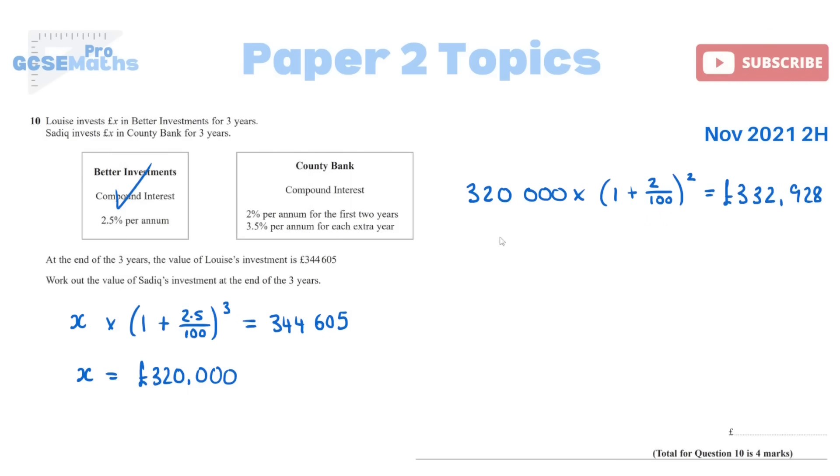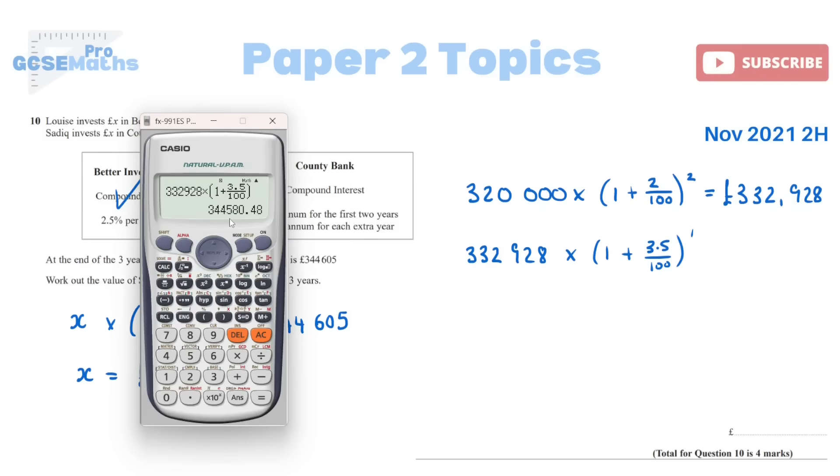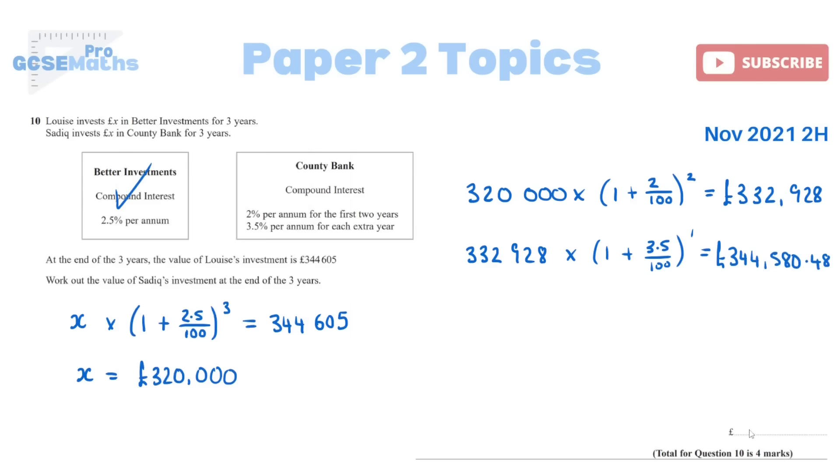But we still have one more year left. So this is now going to be our new principal amount. That's now here, times by 1 plus the different interest rate, 3.5 over 100. Technically to the power of 1 year, but obviously that makes no difference, so you don't really need to write that. And that gives you £344,580.48. I tend to just leave the decimal because it's only two decimal places, which works in the case of money anyway. And that's the value of Sadiq's investment at the end of 3 years.